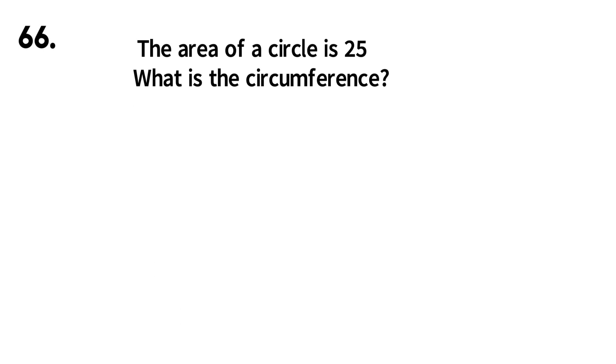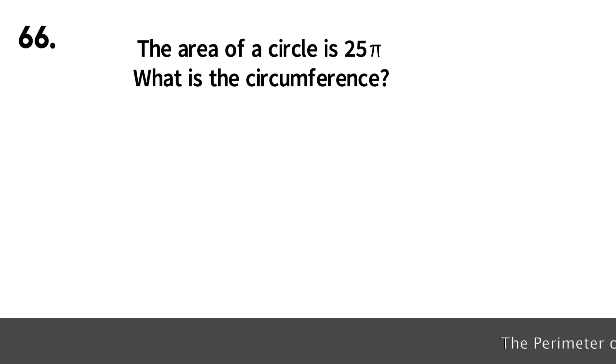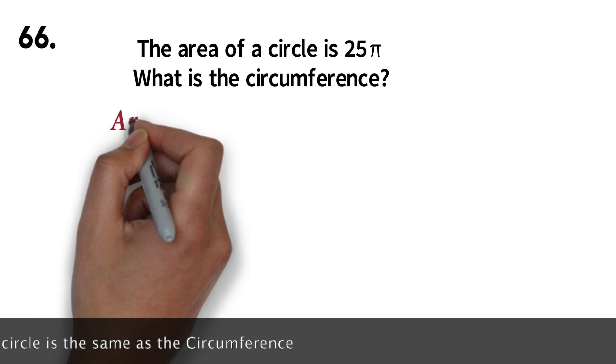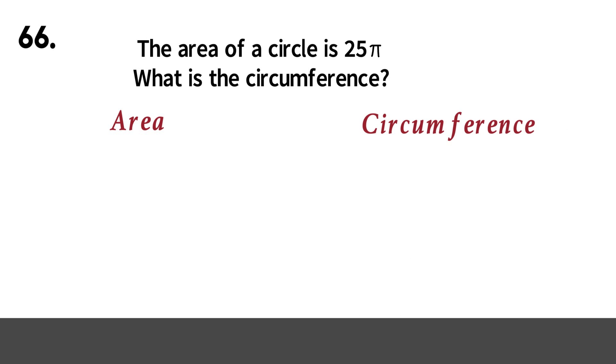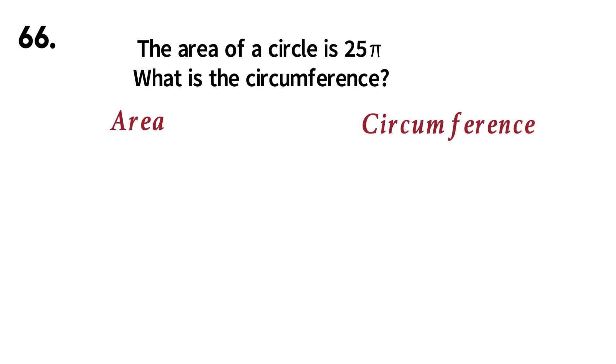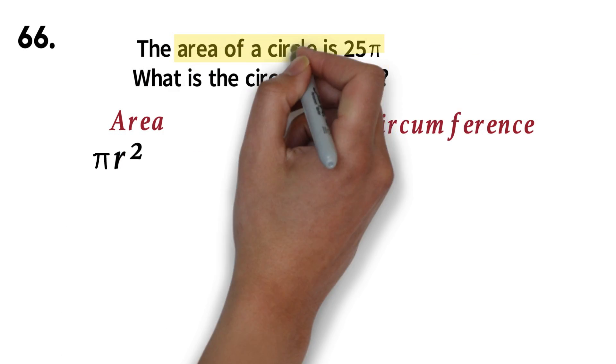Question 66. The area of a circle is 25 pi. What is the circumference? This is also another common question. Here, you are given either the perimeter and asked to find the area or vice versa. The most important thing here is knowing or remembering how to use the formula for area and the formula for circumference. The formula for the area of a circle is pi r squared.